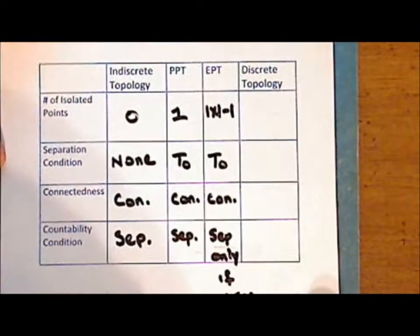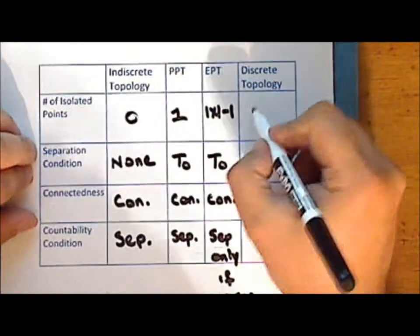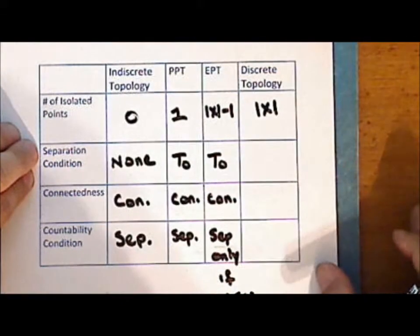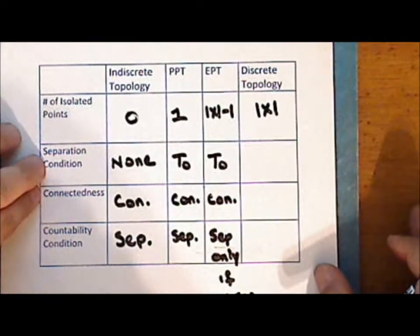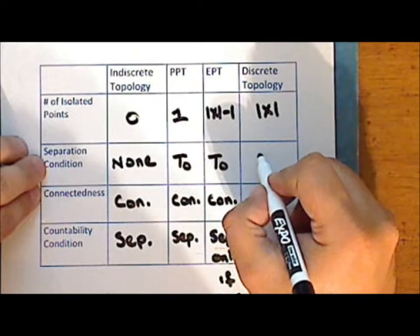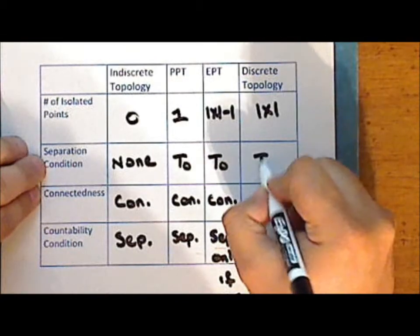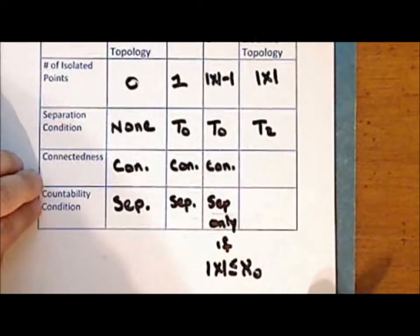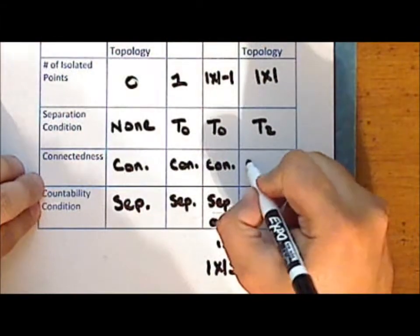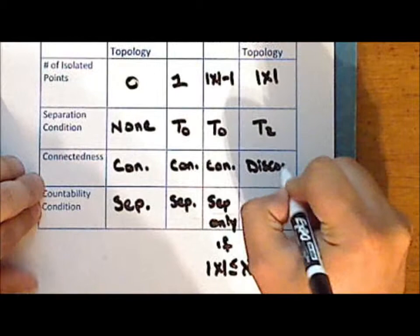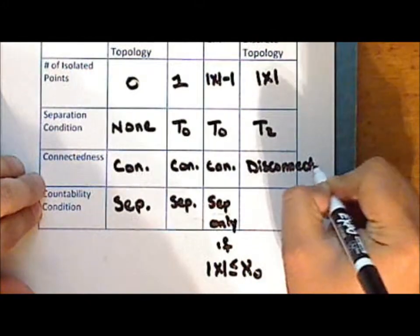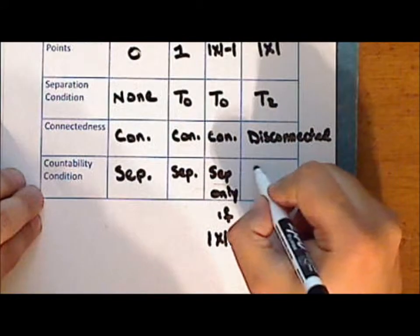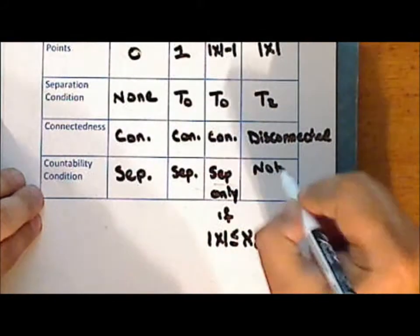In the discrete topology, the entire set consists of isolated points. A discrete topological space is T2 or Hausdorff. A discrete topological space is completely disconnected. And a discrete space is not separable.